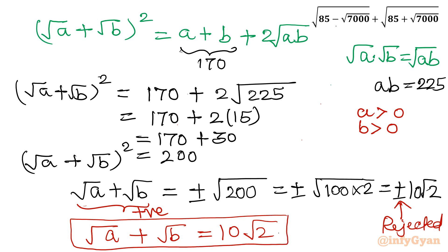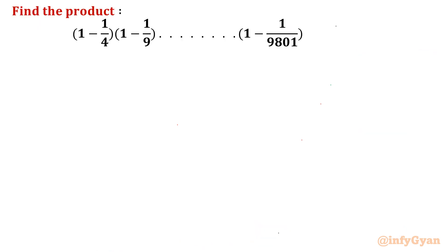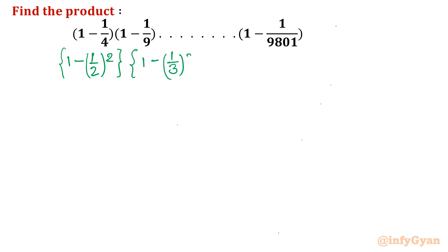Now question number 2: find the product (1 minus 1/4)(1 minus 1/9) up to (1 minus 1/9801). We recognize that 4 is 2 squared, 9 is 3 squared, and 9801 is 99 squared. So we can rewrite each factor: the first term is 1 minus (1/2) squared, the second term is 1 minus (1/3) squared, and so on.